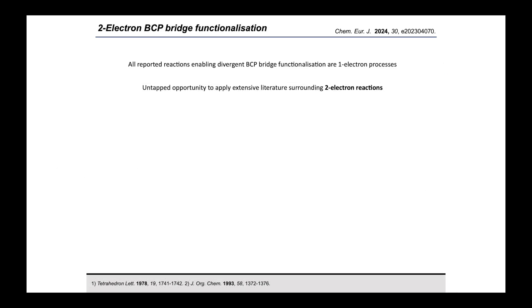So hopefully you can appreciate from this brief literature summary that there are now a handful of methods for functionalization of the BCP bridge positions, starting from either the carboxylic acid or the bromide. However, all of these reactions are radical or one-electron processes, and so at the outset of this project there remained untapped opportunity to explore two-electron or polar chemistry to derivatize the BCP bridges.